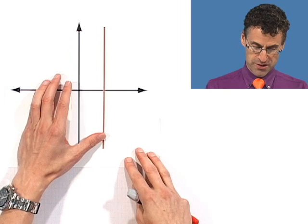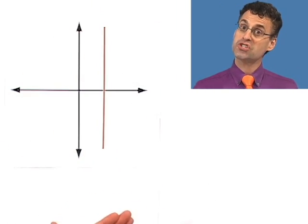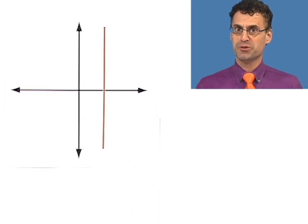Change in y over the change in x, but if it is vertical, there's no change in x. The x values are all the same, which means if you try to compute the slope, you're going to get something over zero. All right. So, we all know you can't divide by zero. So, therefore,